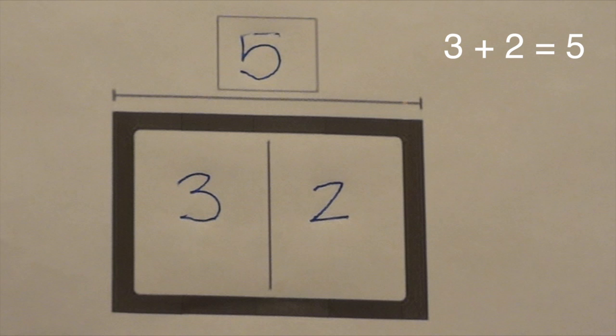We can also create another addition sentence by flipping the two parts. We call that the turnaround fact. In both sentences the parts add up to the whole.